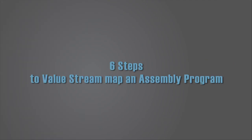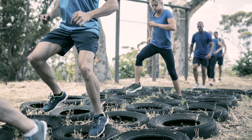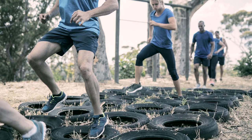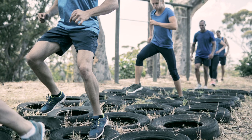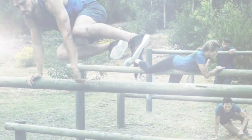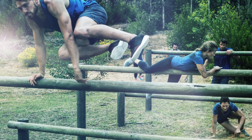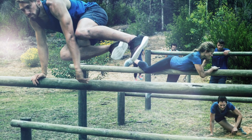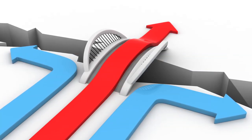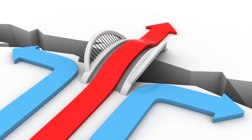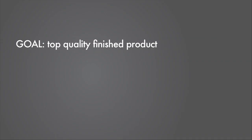Value stream mapping assembly: six steps for continuous improvement. Value stream mapping the assembly process to affect future state improvements is somewhat like developing a strategy to run a competitive obstacle course — run it in the most direct way with the minimum amount of effort for maximum success.